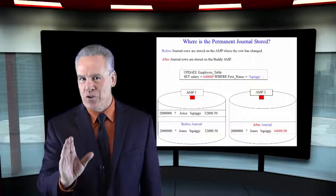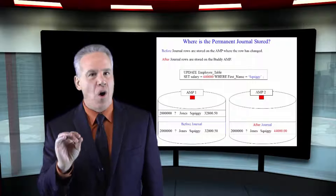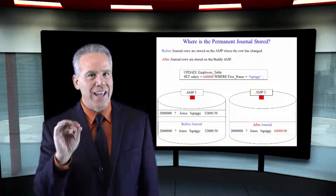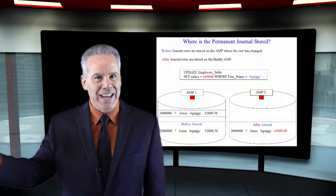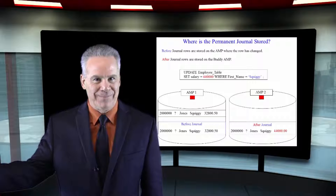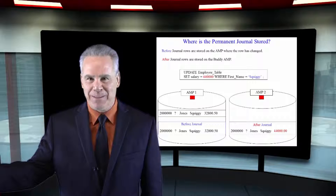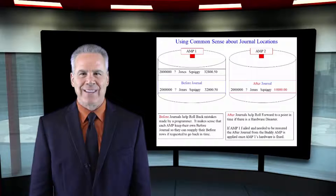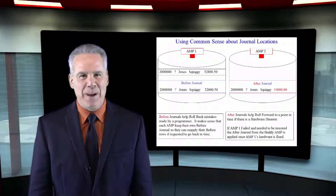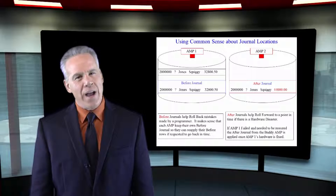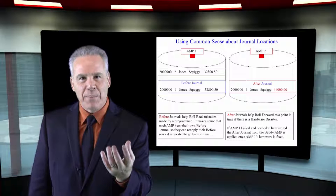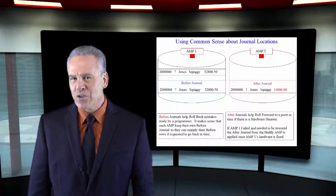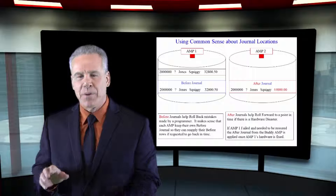An after journal always stores its row on its buddy amp for safekeeping. Why would they store a before journal on the same amp and an after journal on a buddy amp?